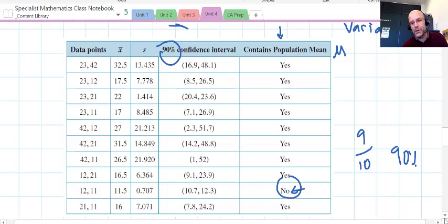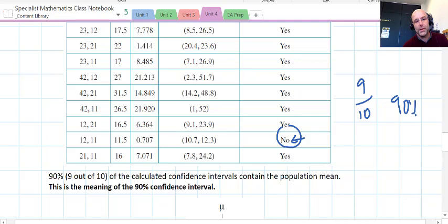So in that example there is where we have the 90% confidence interval. We have 9 out of 10, or 90% of the calculated confidence intervals—that's what's happening in this column here—contain the population mean. That's the meaning of the 90% confidence interval. 90% of such samples calculated in this manner will contain the true population mean.